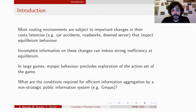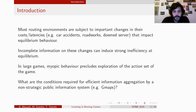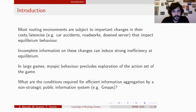Moreover, if we model these situations using large games, there is a natural presence of myopic behavior, which will preclude exploration of the action set over the course of the game. In this paper, we try to answer the following question: what are the conditions required on the premises of the game such that in the long run, there is efficient information aggregation by a non-strategic and public information system — that is, an information system that gathers information transmitted to agents without being able to manipulate it or create any sort of incentive.